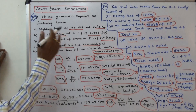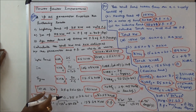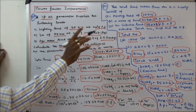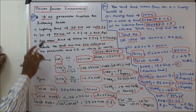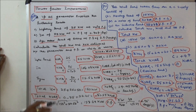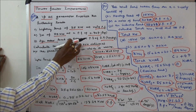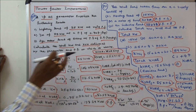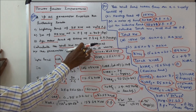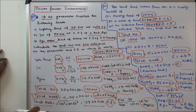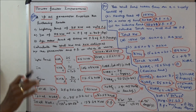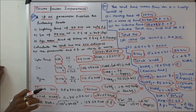Third problem. A single phase AC generator supplies the following loads. Number 1: lighting load of 25 kW at unity power factor. Number 2: induction motor 75 kW at a power factor of 0.707 lagging. Number 3: synchronous motor load of 50 kW at a power factor of 0.9 leading. Calculate the total kW and kVA delivered by the generator and the power factor at which it works. First we calculate kVA1, kVA2, and kVA3.